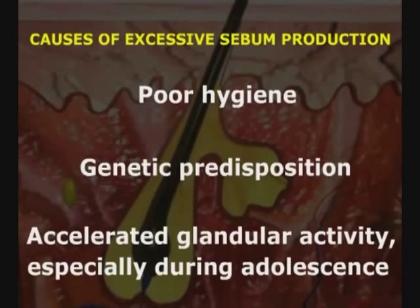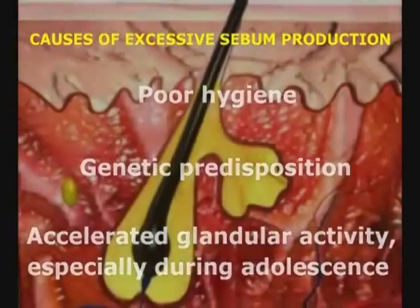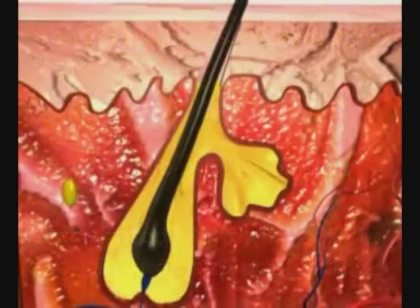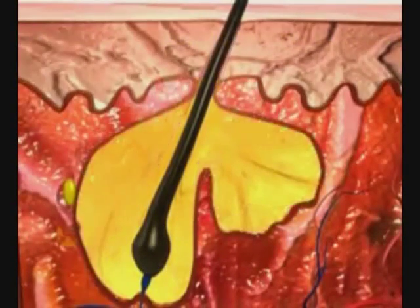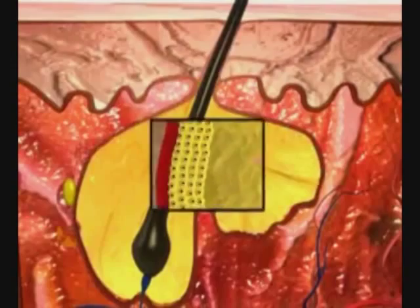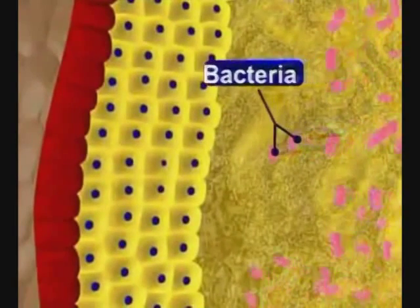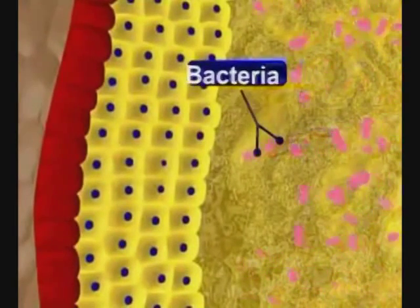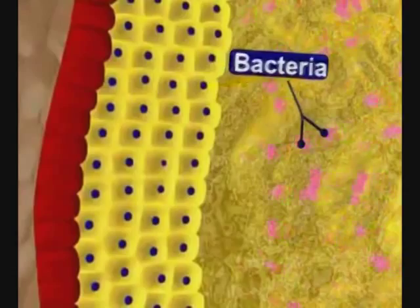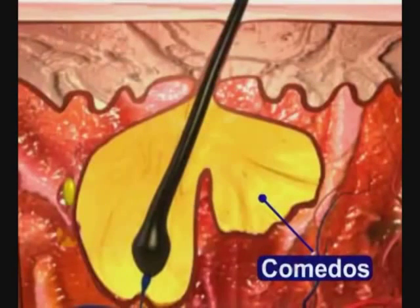During an acne breakout, the pore of the hair follicle is plugged by a mixture of sebum and cells that line the hair follicle. The trapped sebum allows bacteria to grow in the plugged follicles, forming the primary acne lesion called a comedo.